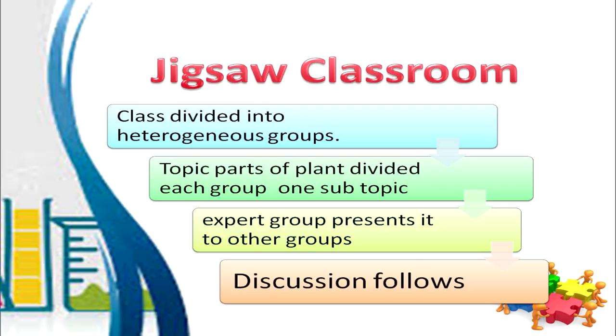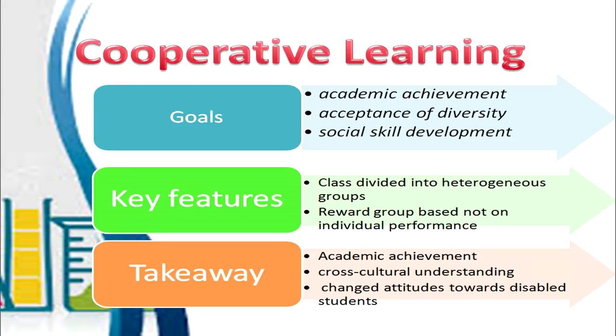The expert group then presents the topic to the other groups. This is followed by discussion, and questions can be raised to the expert group by other group members. So the sub-topics are taken up by small groups, and the whole topic — parts of the plant — is completed. The jigsaw classroom is an example of a cooperative learning classroom.